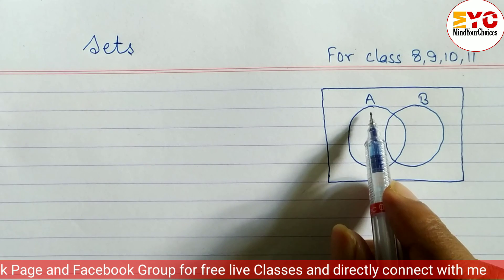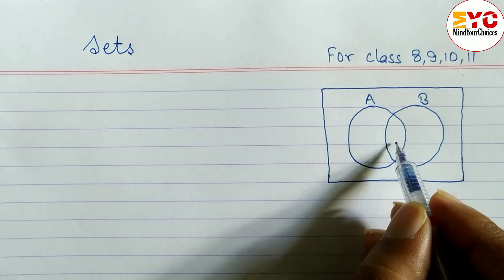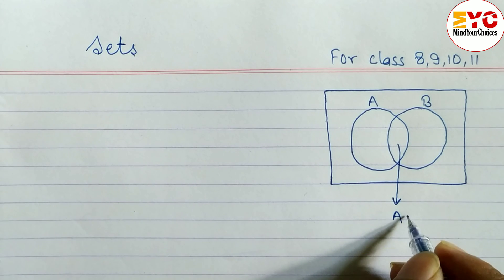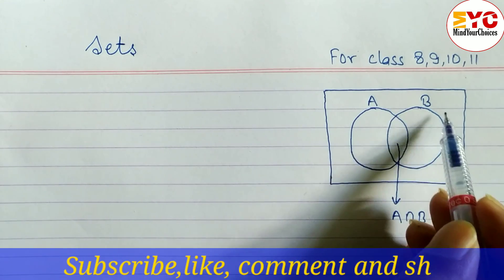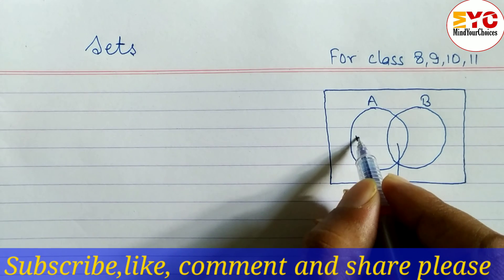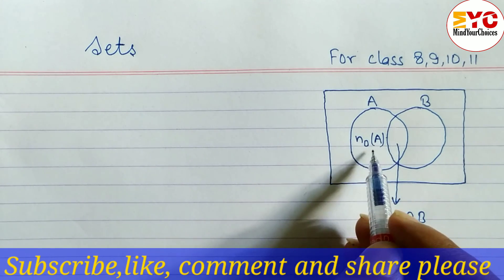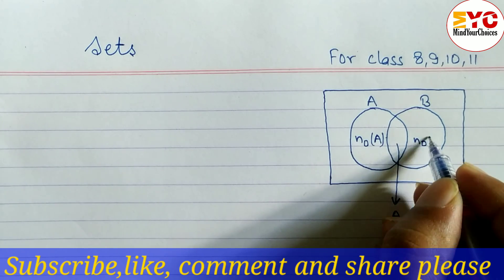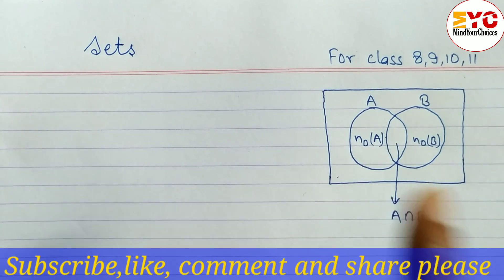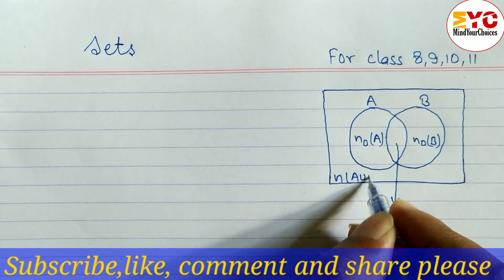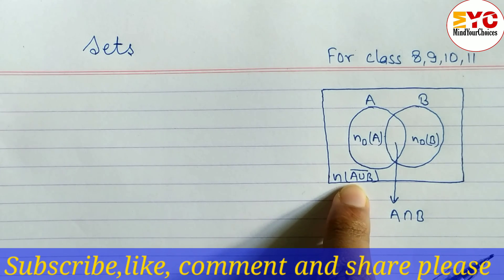Here you can see two sets: set A and set B. The middle part which is common for both A and B is known as A intersection B. The whole circle on the left is set A and the right is set B. The part belonging only to A is known as 'A only', and the part belonging only to B is known as 'B only'. The area outside both sets is known as A union B complement — complement means outside the set, not included.